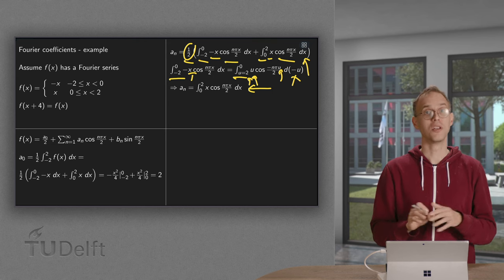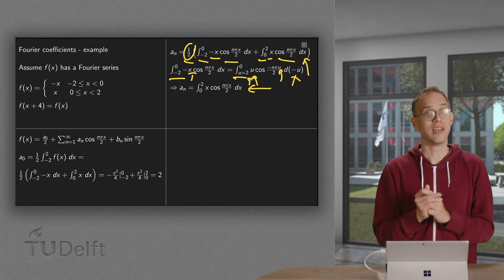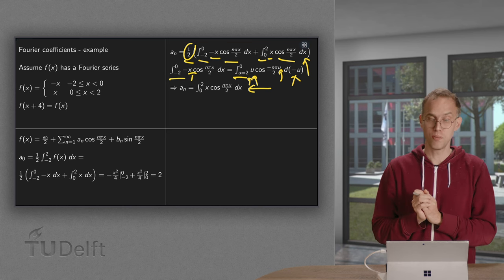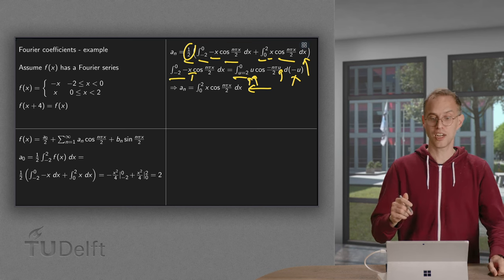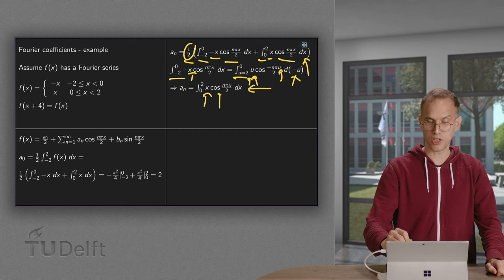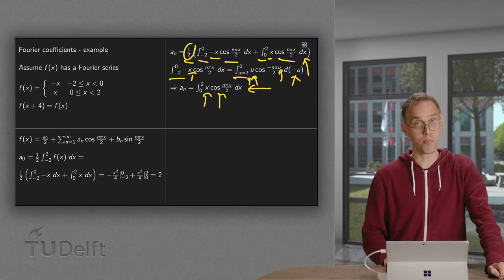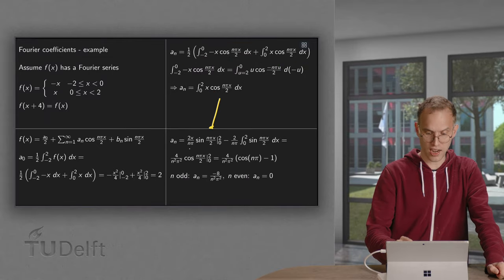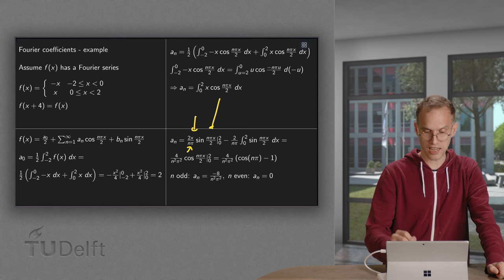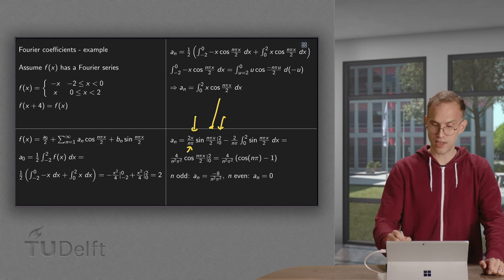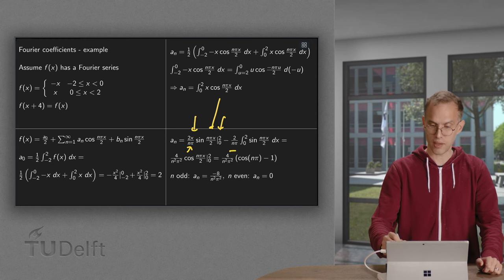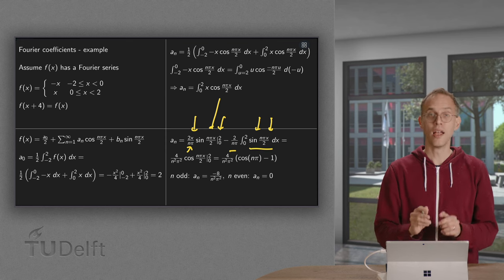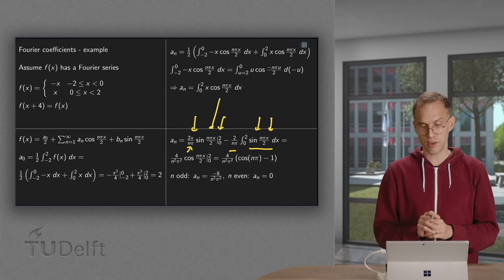So we still have to compute this integral, but the expression is now a bit more compact. How do we compute this integral? Of course integration by parts, because we have an x times a cosine. So we integrate the cosine, which gives us a sine times some rubbish, and we leave the x as is between the boundaries. Minus the 2 over n pi times the sine times the derivative of the x, times this second integral.